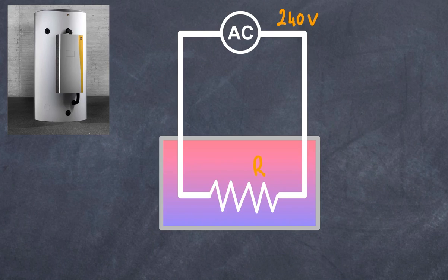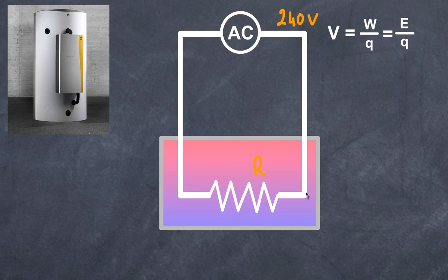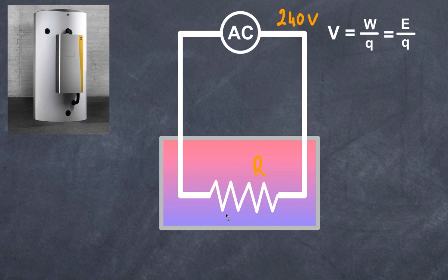What determines how much energy passes through? There are those three variables. The first is voltage — for physicists, voltage is the amount of work done per unit charge, or the amount of energy per charge. Electrons flow through the circuit and those electrons carry energy. So 240 volts means 240 joules for every coulomb of charge. How much current flows is determined by the resistance — a larger resistance gives a lower current, a lower resistance gives a higher current for the same voltage. Current is the rate of flow of charge.